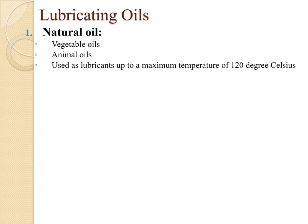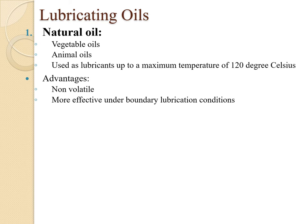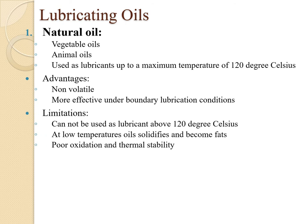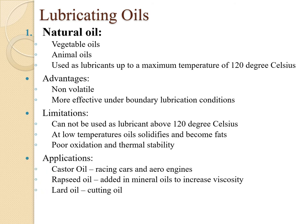In lubricating oils, the first type is natural oils. Natural oils include vegetable oils and animal oils, and are used as lubricants up to a maximum temperature of 120°C. Advantages: natural oils are non-volatile and more effective under boundary lubrication conditions. Limitations: they cannot be used above 120°C, they solidify at low temperatures, and have poor oxidation and thermal stability.